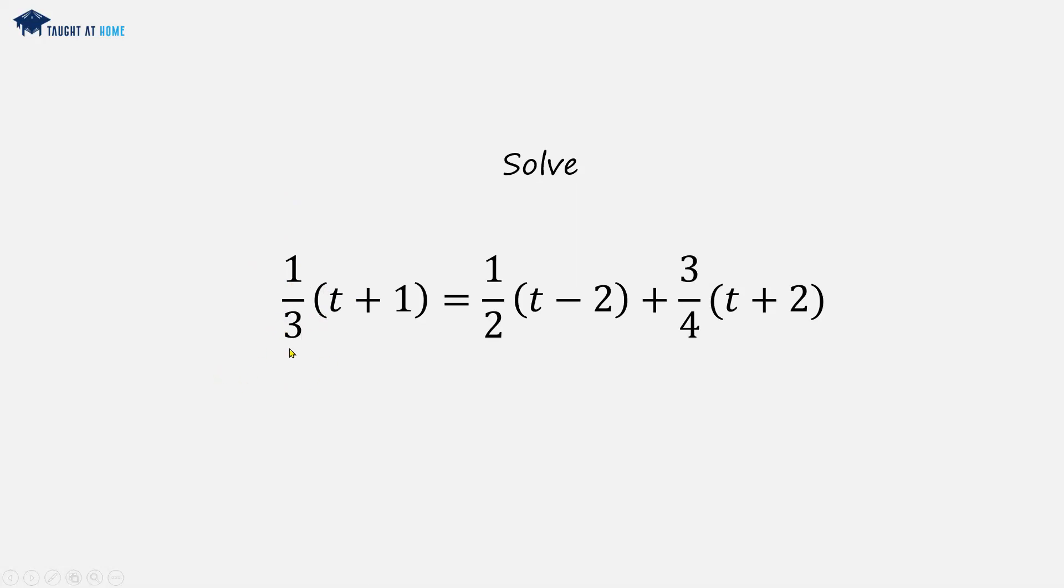Again, we want to get rid of the denominators. We do this, as before, by multiplying throughout by the lowest common multiple of 3, 2, and 4, which is 12. So let's multiply each of these terms by 12.